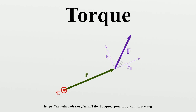For example, if a person places a force of 10 N at the terminal end of a wrench that is 0.5 meters long, the torque will be 5 N·m, assuming that the person moves the wrench by applying force in the plane of movement and perpendicular to the wrench. For an object to be in static equilibrium, not only must the sum of the forces be zero, but also the sum of the torques about any point.